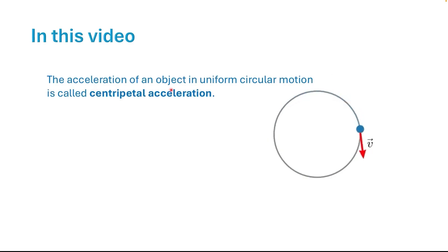The acceleration of an object in uniform circular motion is called centripetal acceleration. The magnitude of centripetal acceleration is a equals v squared over r. In this video, I am going to derive this formula using vector components.